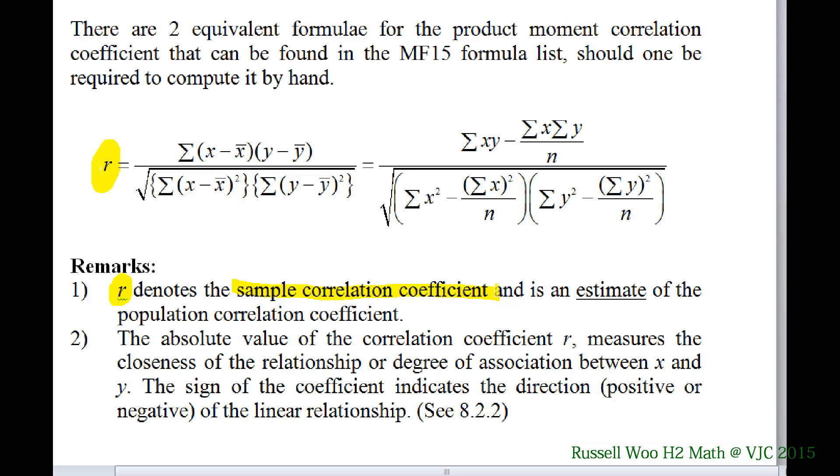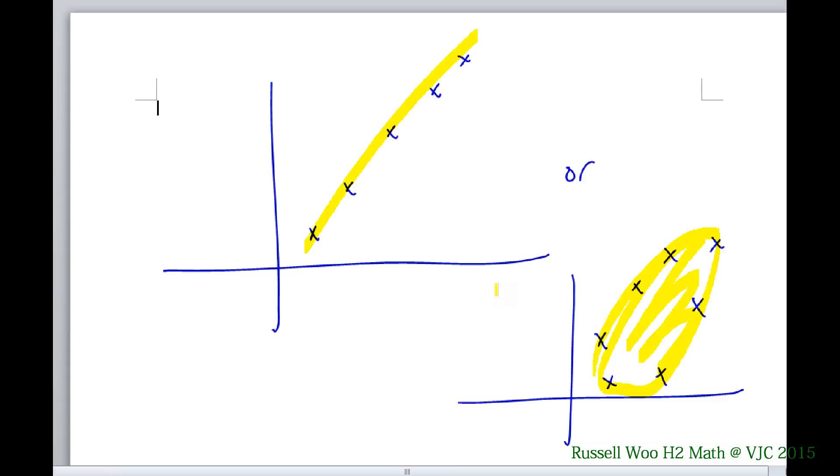The closer it is to one, the better, the stronger the correlation. So which means this one will have maybe 0.9, for example. Earlier, this one will have maybe 0.6.